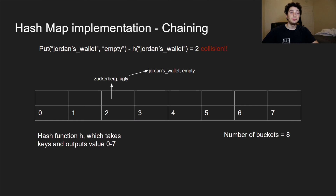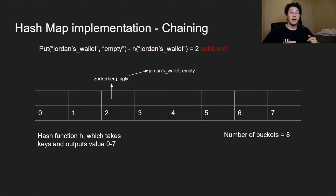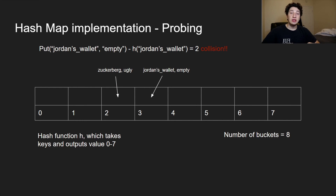With chaining, at index two we now have 'Zuckerberg ugly' chained to 'Jordan's wallet empty' via a linked list — there's an easy way to traverse from one node to the next, with the root node starting at index two. With probing, instead of creating a linked list we keep everything in the array: since 'Jordan's wallet' hashes to index two and index three is empty, we place it at index three.